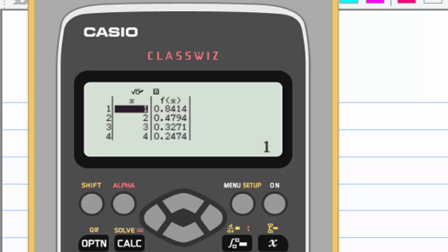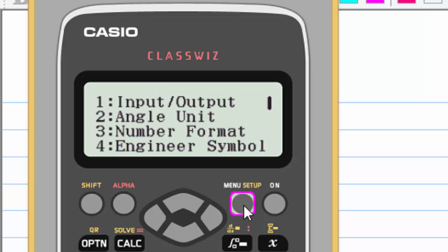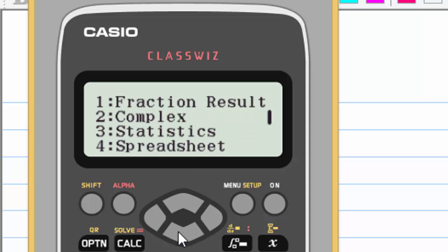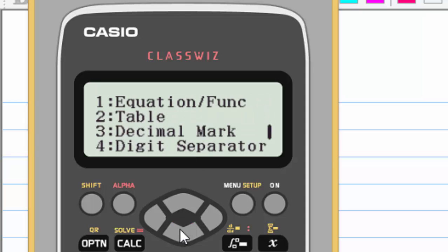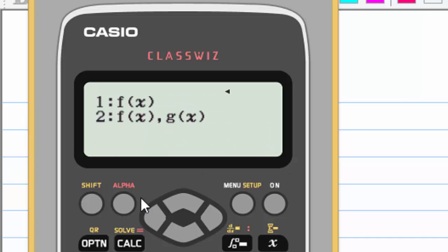How about if I want to get a table of 1/x? You can do a setup now. You press shift, setup, go to table, which is number 2 here, and then select 2 for g(x) as well.